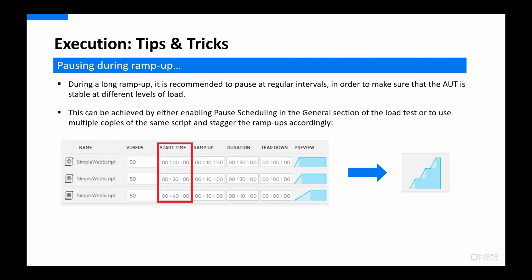If the application under test is showing signs of not being stable while the load is kept at the same level, then you know there might be a bottleneck somewhere that needs to be investigated. This also ties back to the use of a slow ramp-up, so that you can try to catch any issues as early as possible — since it might be easier to find a bottleneck when you only have ten virtual users in the system compared to one hundred or even one thousand.